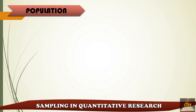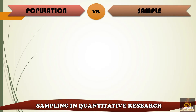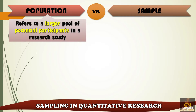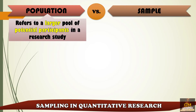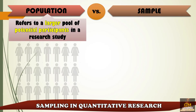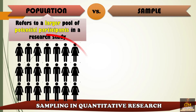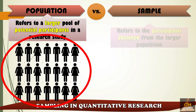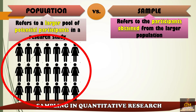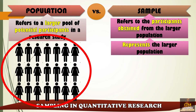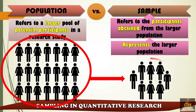But first, let's identify the differences between population and sample. Population refers to a larger pool of potential participants in a research study, whereas sample refers to the participants obtained from the larger population. The sample is used to represent the larger population.